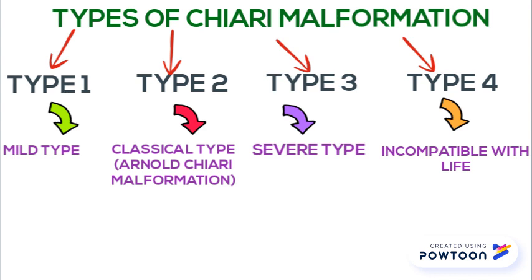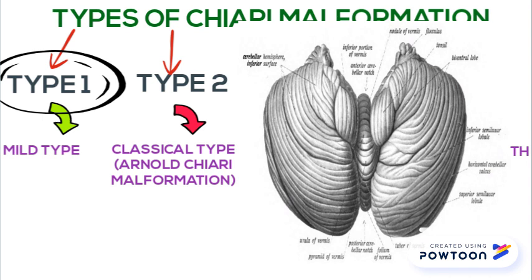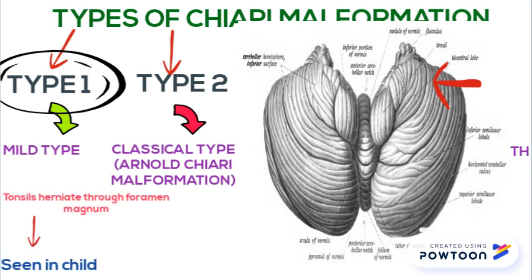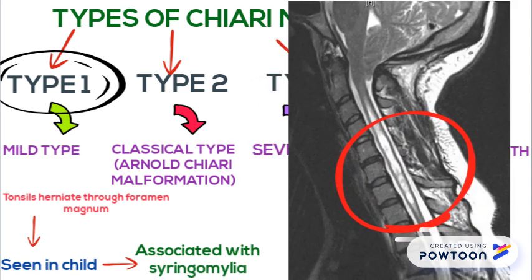The cerebellum has different parts. In type 1 Chiari malformation, the tonsils — which are a part of the cerebellum — herniate through the foramen magnum. It is typically seen in children and is associated with syringomyelia, which is a condition in which there is a fluid-filled cavity formation in the spinal cord.